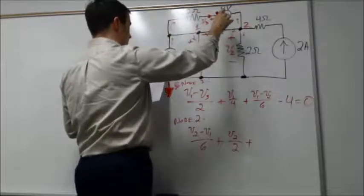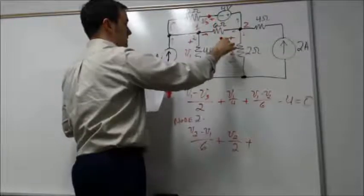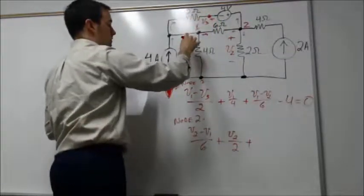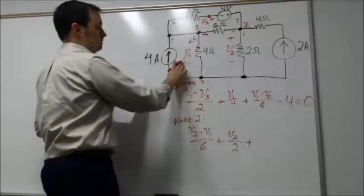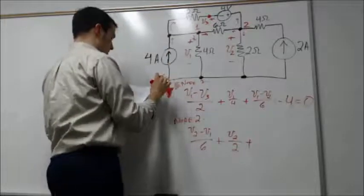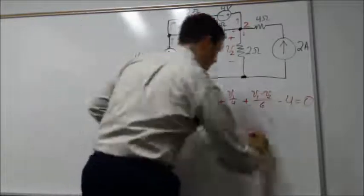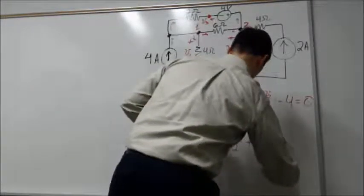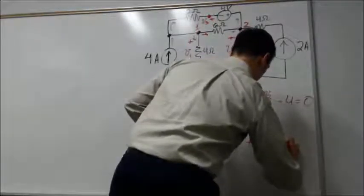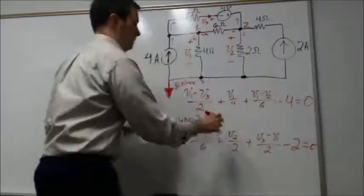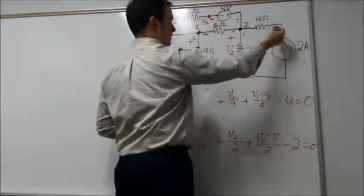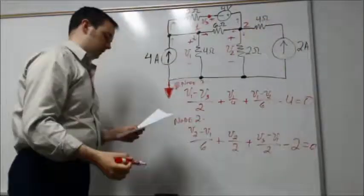It's between V3 and V1, as these are the two node voltages on either side of this 2-ohm resistor. So I have plus (V3 - V1)/2, then minus 2 equals zero. The minus 2 is from this current source traveling into that node. Now I have the two node equations we wanted from the node voltage method. But we have three different variables: V1, V2, and V3.